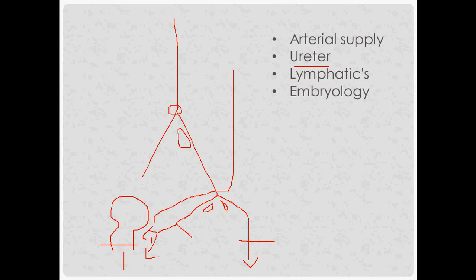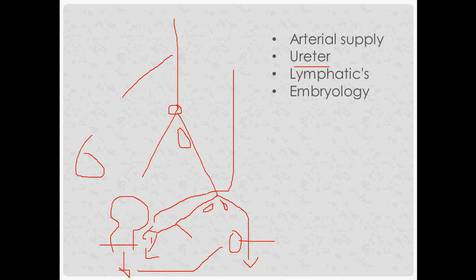The distal vagina comes embryologically from the urogenital sinus and drains to the femoral — that is, the inguinal nodes near the femoral artery. The ovary comes from a different embryological origin, receives blood directly from the abdominal aorta, and drains to the para-aortic nodes.